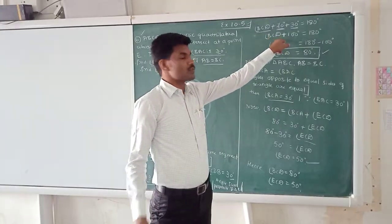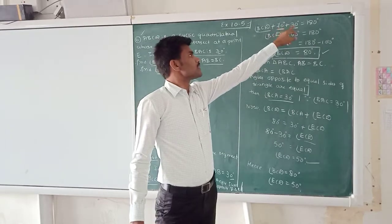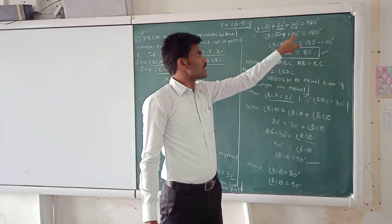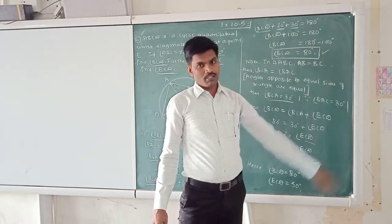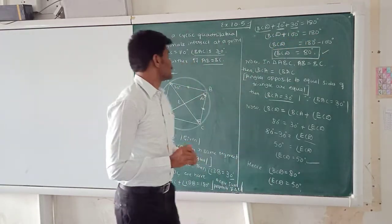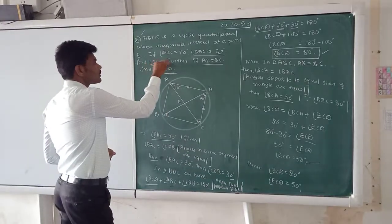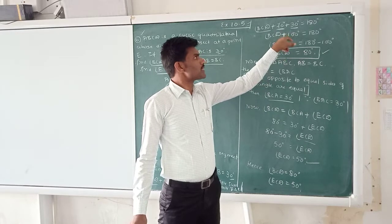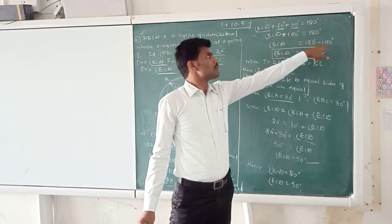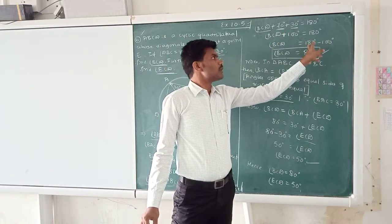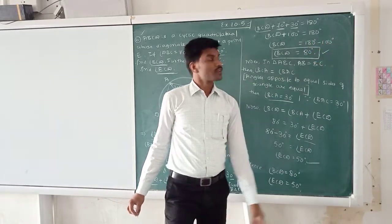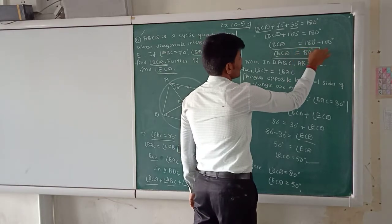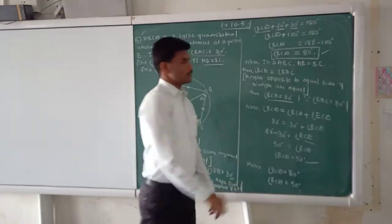See, angle BCD we should write as it is. 70 plus 30 is equal to 100. So, angle BCD plus 100 degrees is equal to 180. But, he asked to find out the angle BCD. So, what do we know? You know, angle BCD plus 100 is there. Transport to right hand side, it becomes 180 minus 100. So, angle BCD is equal to 180 minus 100. You will get that 80 degrees as angle BCD.